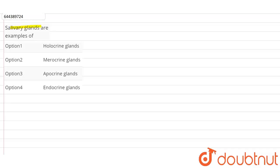In this question, we have to say whether the salivary gland is a holocrine, merocrine, apocrine, or endocrine gland. We have three pairs of salivary glands which pour their secretion into our buccal cavity, and this initiates the chemical digestion of our food in the mouth itself.